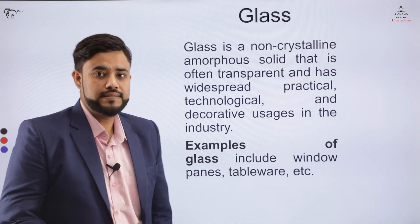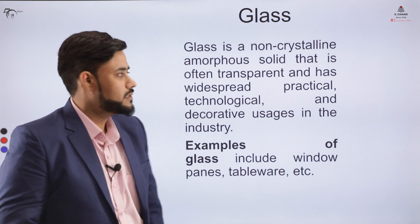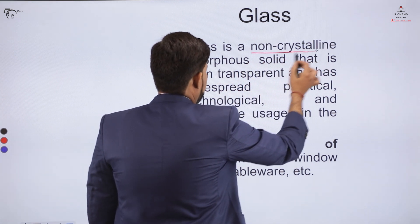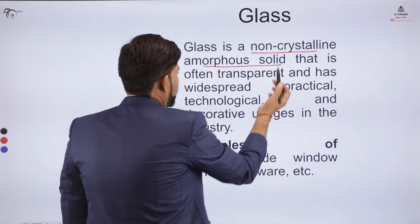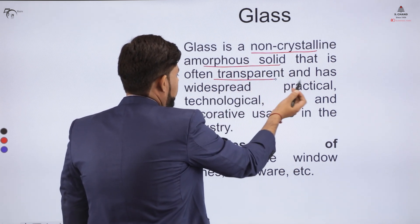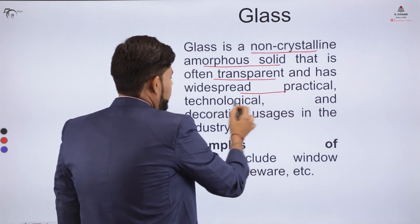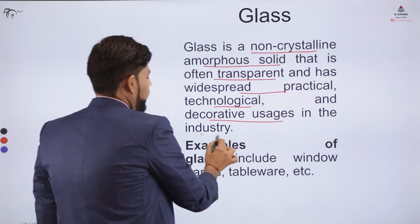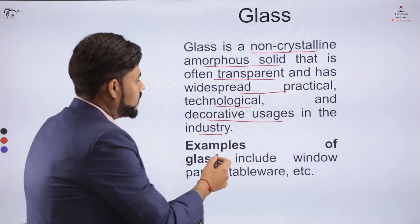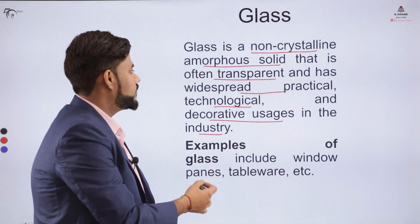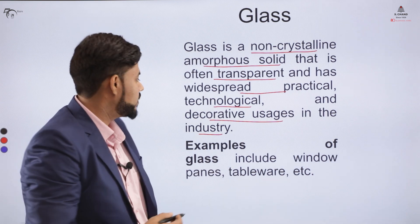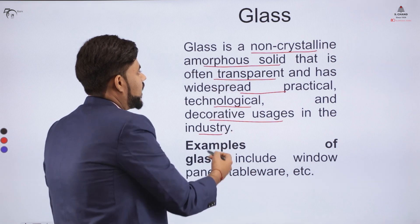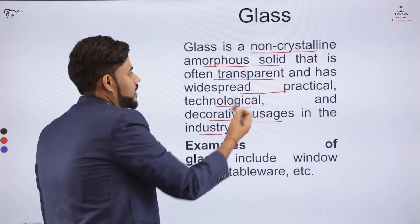Firstly, let us understand what glass is. Glass is basically a non-crystalline and amorphous solid that is often transparent and has widespread technological or decorative usages in the industry. For technological usage or for some creative or decorative usage in industry, we use glass, which is a non-crystalline and amorphous solid.